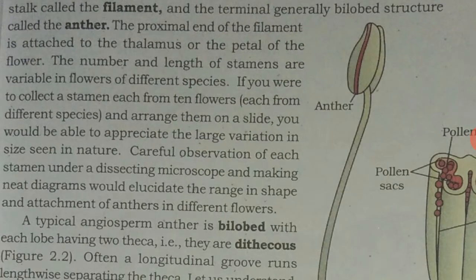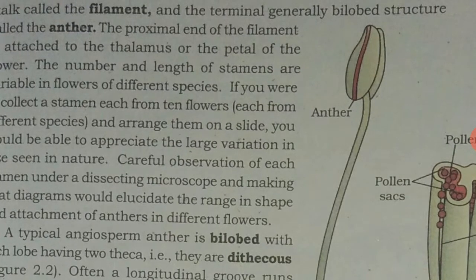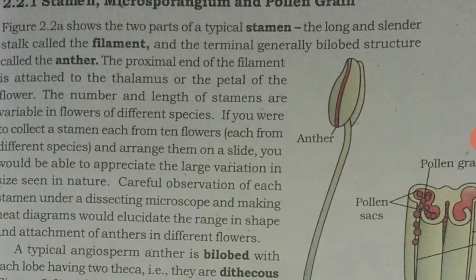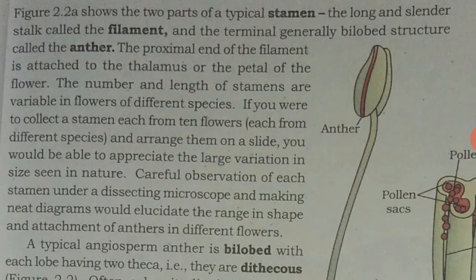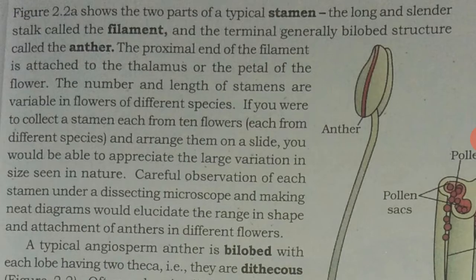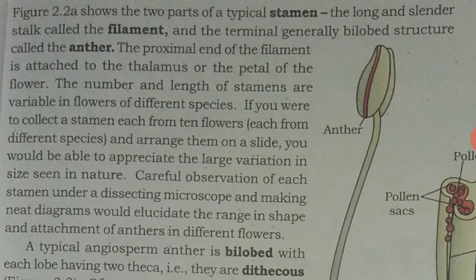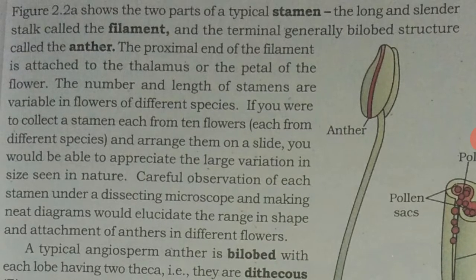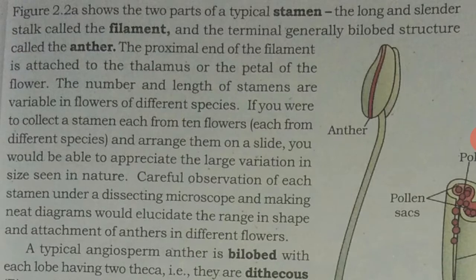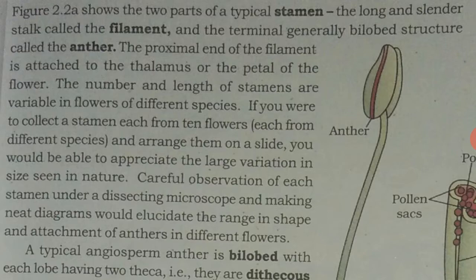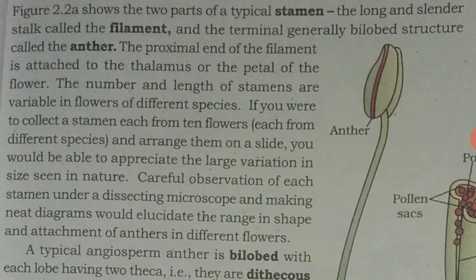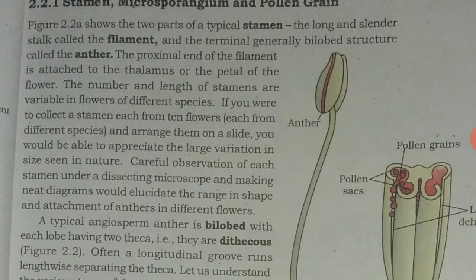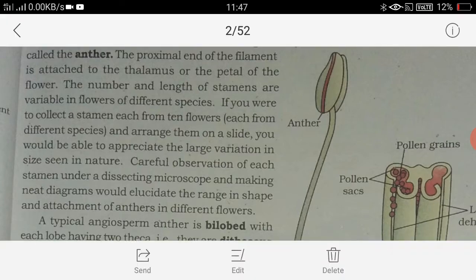Collect one stamen each from ten different flowers, arrange them on a slide — you will be able to appreciate the large variation seen in nature. Careful observation of each stamen under a dissecting microscope and making a neat diagram would elucidate the range in shape and attachment of the anther in different flowers.